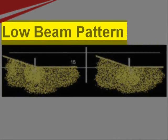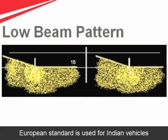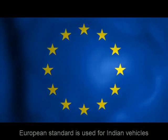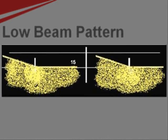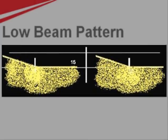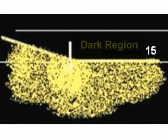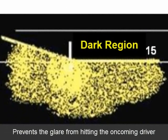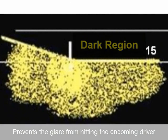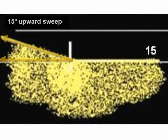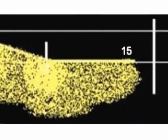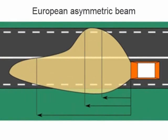When it comes to low beam patterns, for Indian vehicles the standard used is the European standard. The low beam pattern is as shown here. This dark region prevents any additional light from hitting the eyes of the oncoming driver. On the left side, you can clearly see the 15 degree upward sweep. This is the European asymmetric beam.